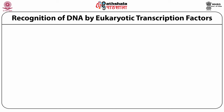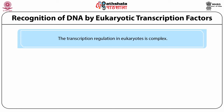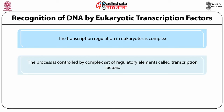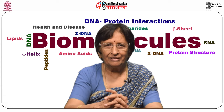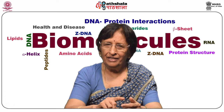Recognition of DNA by eukaryotic transcription factors: transcription regulation in eukaryotes is more complex. The process is controlled by a complex set of regulatory elements called transcription factors. We shall focus our attention on specific transcription factors such as zinc fingers, leucine zippers, basic region leucine zippers B-zip, and basic region helix-loop-helix B-HLH motifs. Single-stranded DNA binding proteins also play an important role.